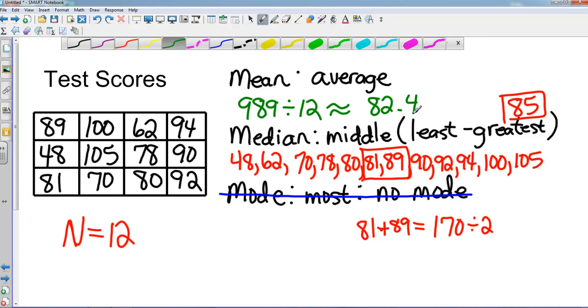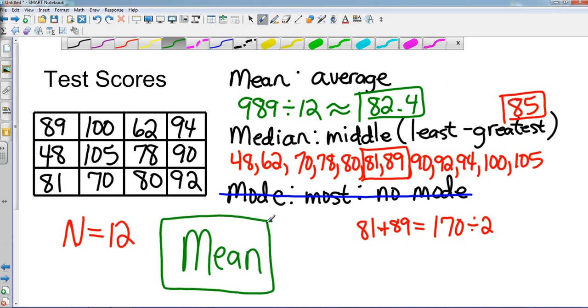Now looking at those, what's going to be my better choice of measure of central tendency to describe my scores? Obviously, in a score type setting, when you take all of your scores and divide them by however many you've had, that's going to be your best bet. So in this case, our mean is our best measure of central tendency.